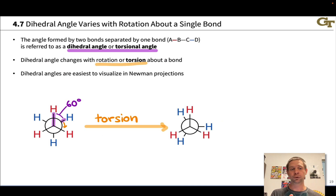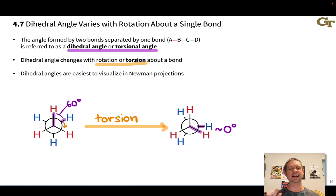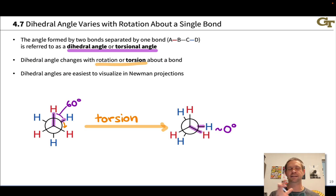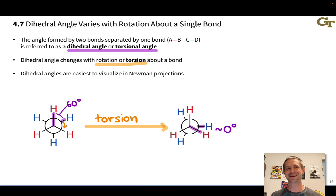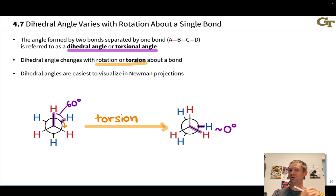We've gone from a 60-degree dihedral angle between those front and back CH bonds to a dihedral angle that is more or less zero. The dihedral angle is very easy to visualize in a Newman projection since it's visible as the angle between two adjacent bonds — there's no need to think in three dimensions. We can almost think in two dimensions to identify that an angle is only 60 degrees. The torsional angle is very important for modeling the energetic dependence of conformation — we can graph torsional angles on the x-axis and the energy of the molecule on the y-axis to see how energy varies with torsional angle.